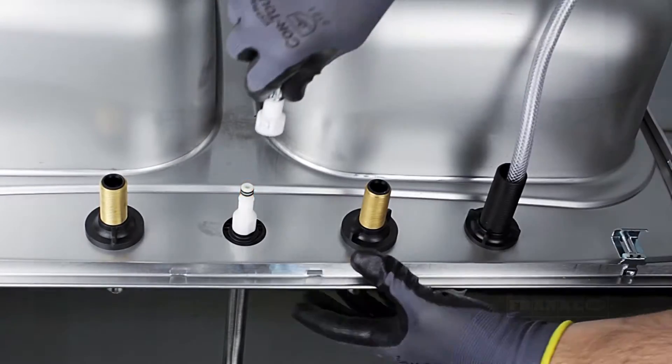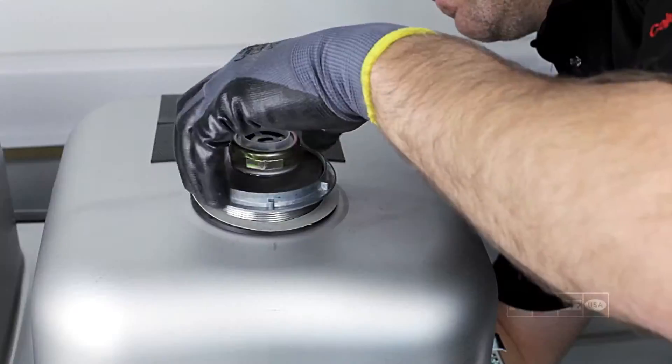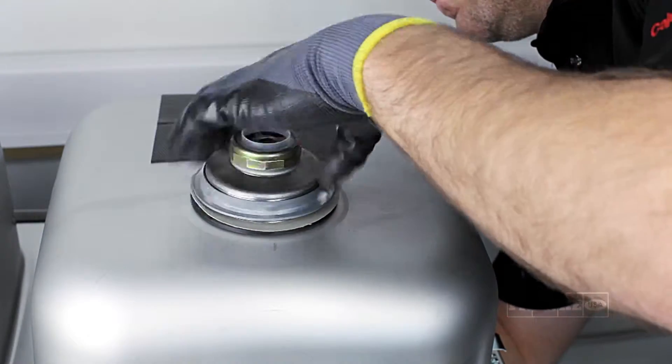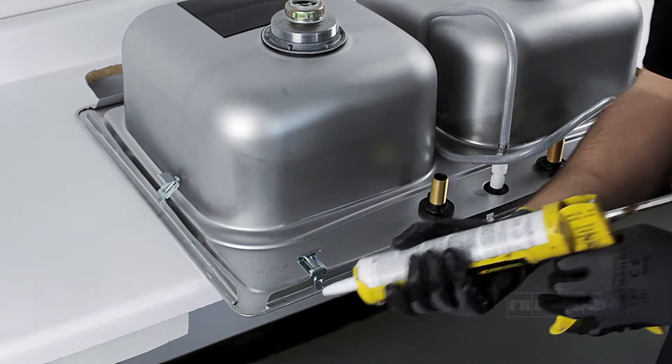Use plumber's putty or silicone sealant under the faucet base and under the top flange of the drain to provide a leak-proof seal.